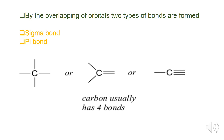Carbon has four electrons in its valence shell, so it needs four more electrons to complete its octet and become stable.